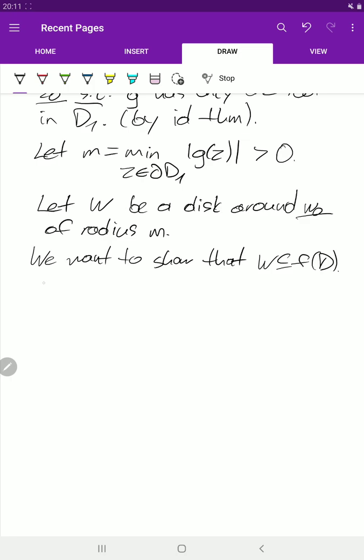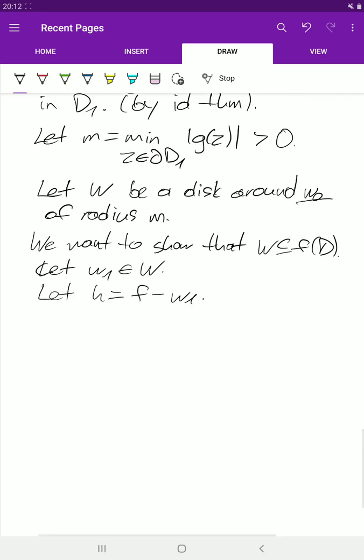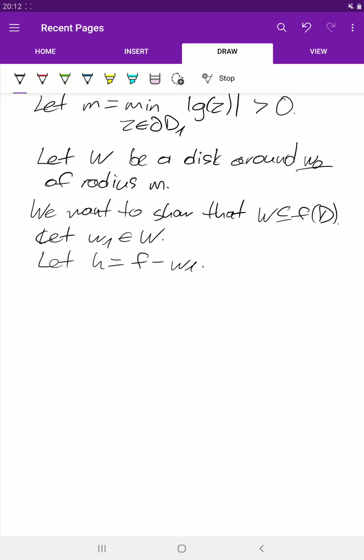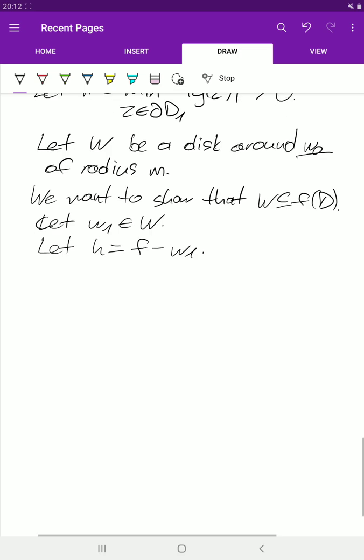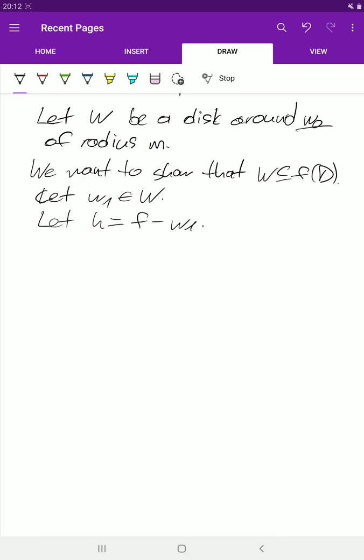So let's take an element w1 in W and consider the function H to be F minus w1. We want to show that this function has a zero in order to conclude w1 is in the image.